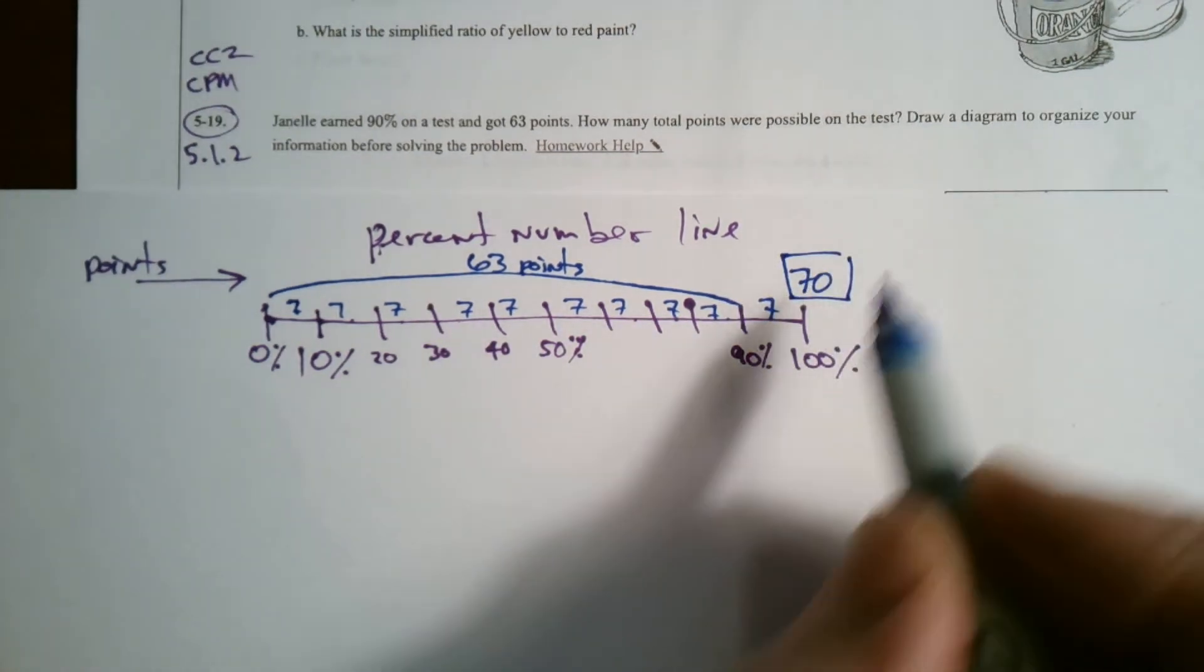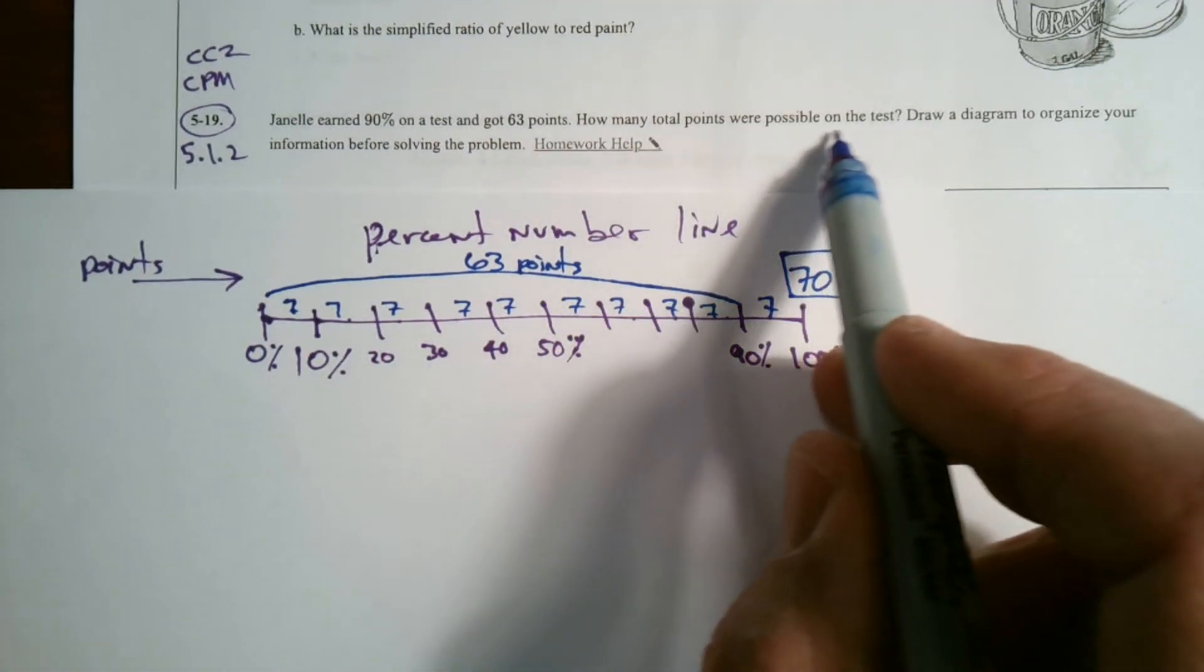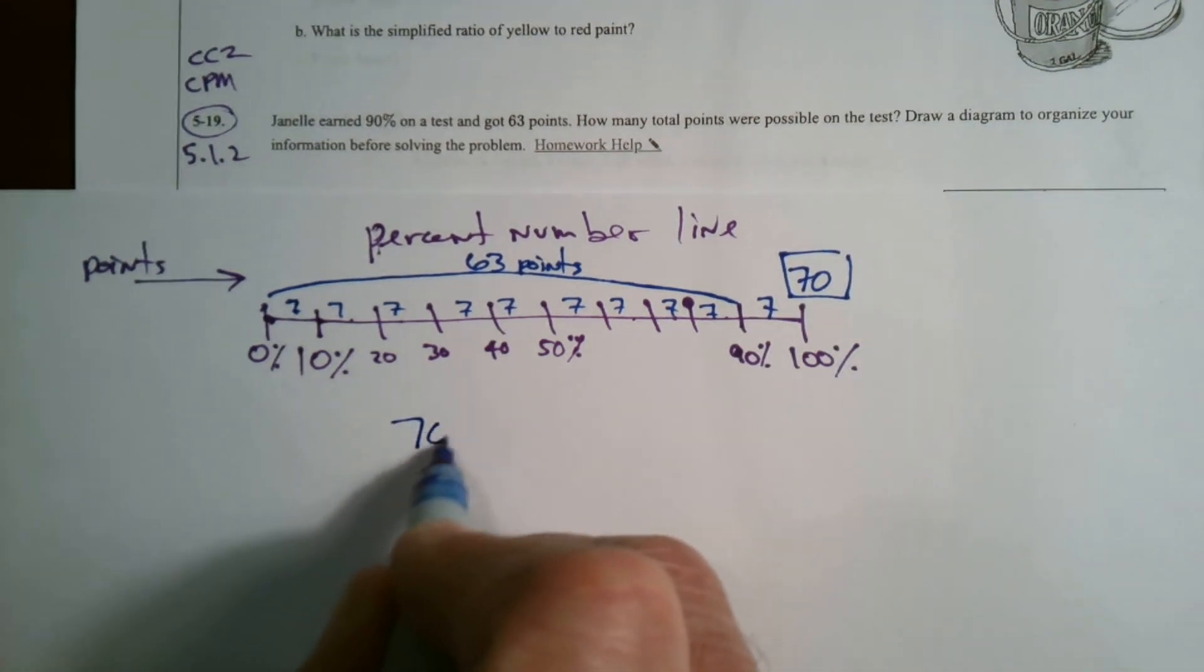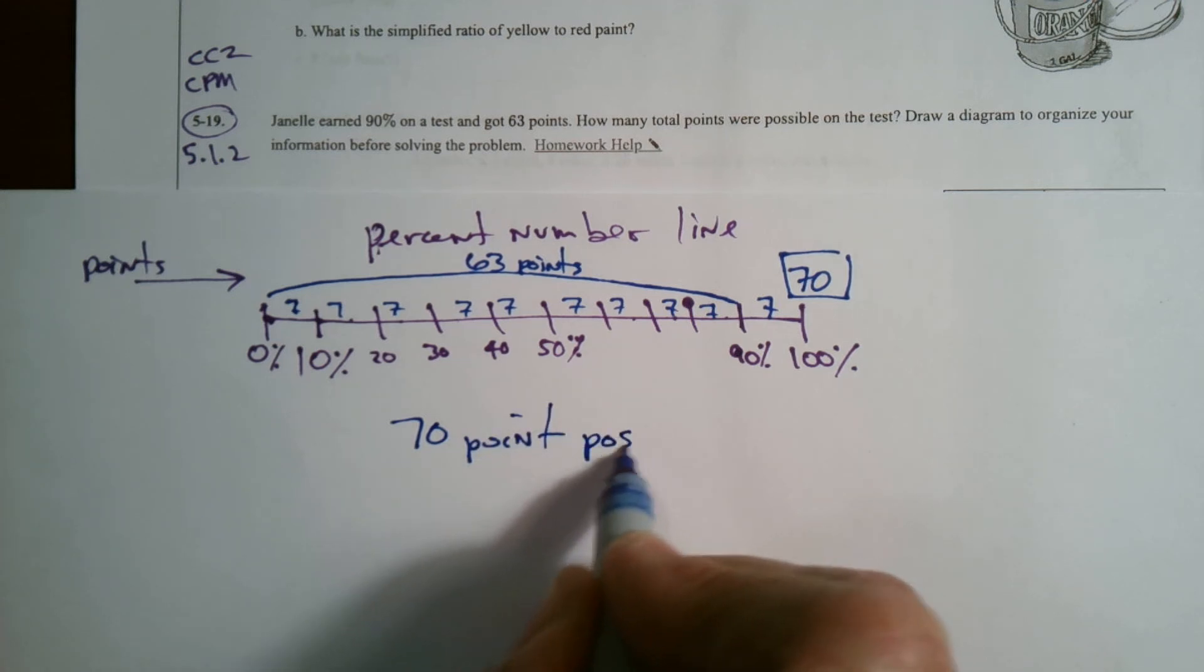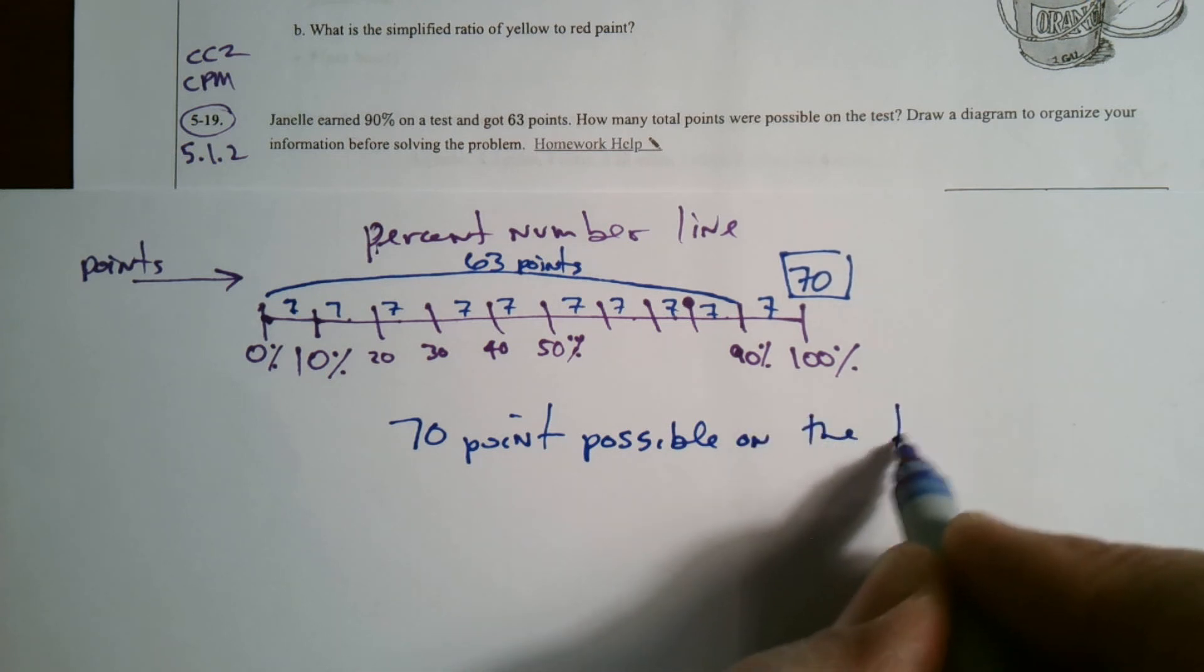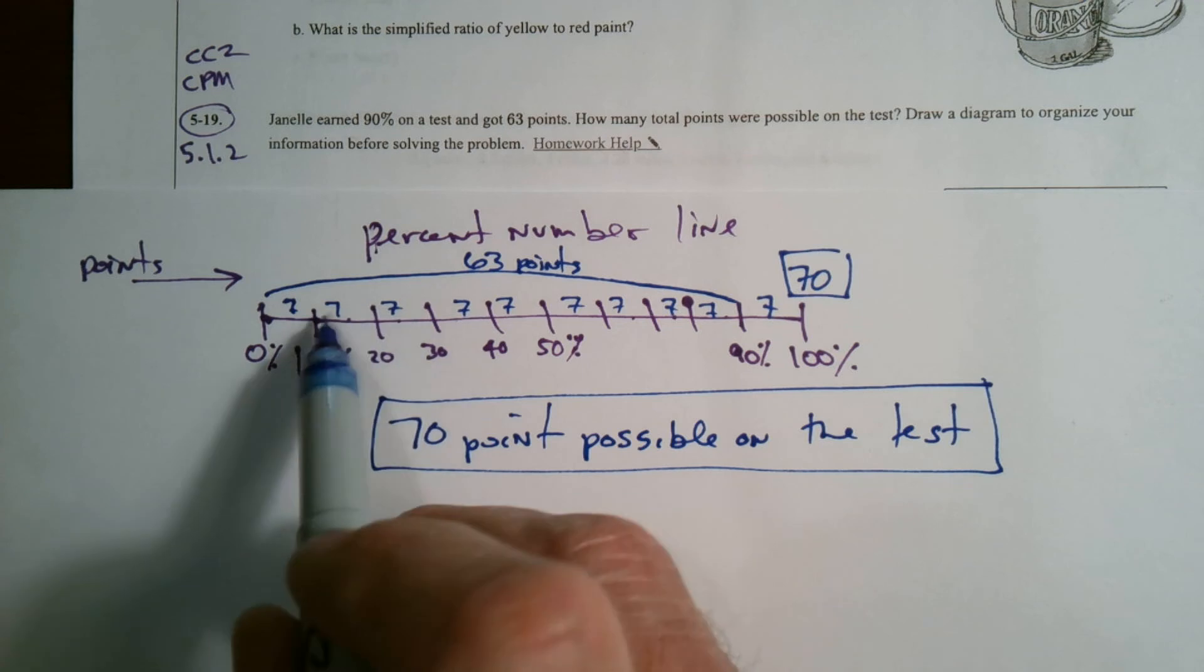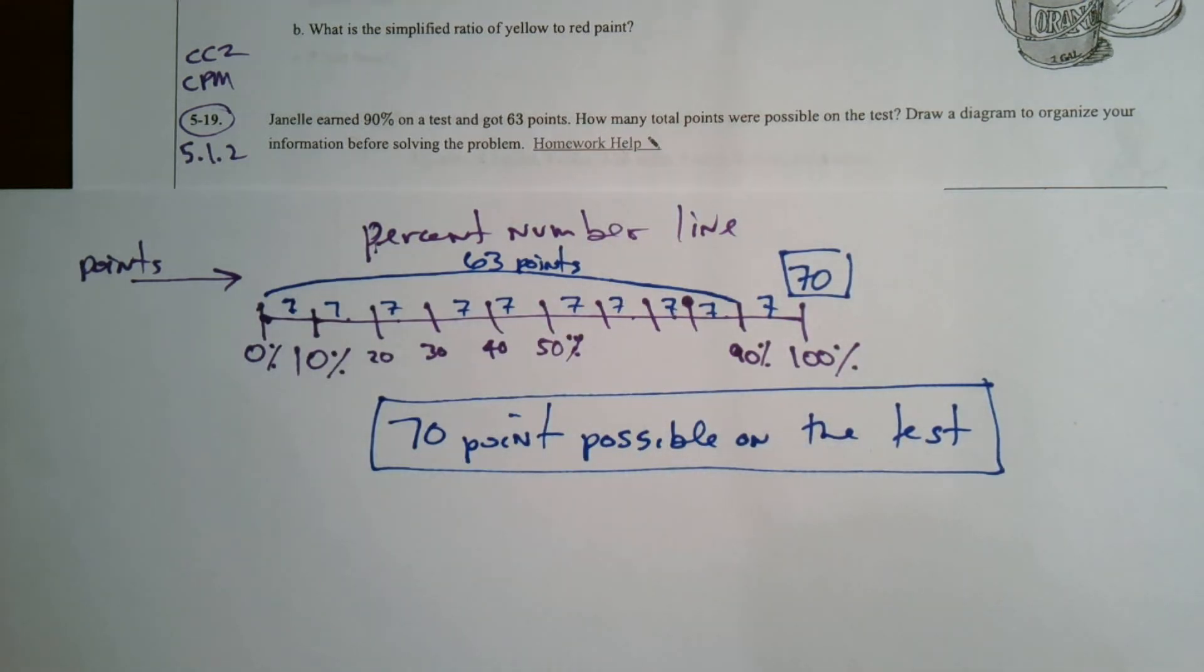So that right there gave me my answer based on looking at this number line. So how many points possible on the test? 70 points possible on the test. So there were 70 points possible on the test.